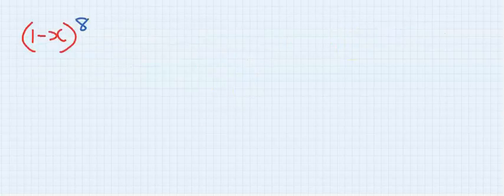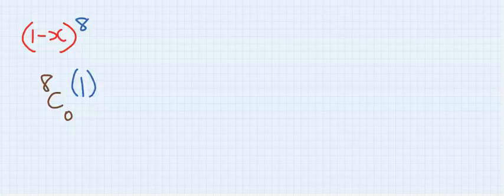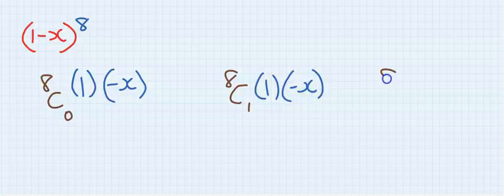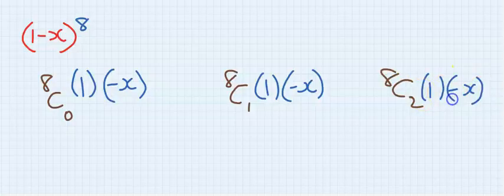The first term will be 8 combination 0. Then we're going to have 1 and the other one will be minus x. This is the first term. The second term is 8 combination 1, 1 minus x. And the third term will be 8 combination 2, 1 minus x. This is the first three terms.